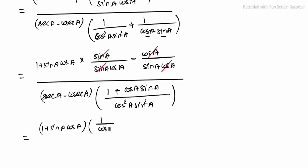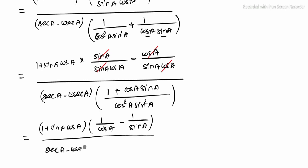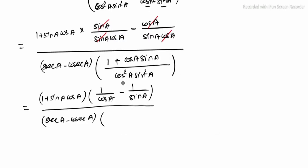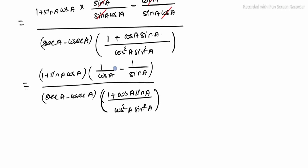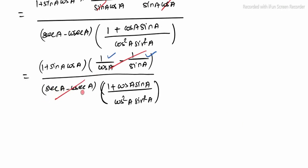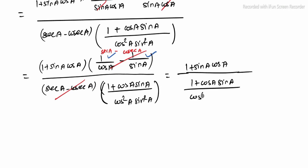We now have (sec A minus cosec A) in the denominator, and the factor 1 over cos A minus 1 over sin A. Since 1 over cos A is sec A and 1 over sin A is cosec A, the (sec A minus cosec A) terms cancel. What remains is (1 + sin A · cos A) divided by cos²A · sin²A.